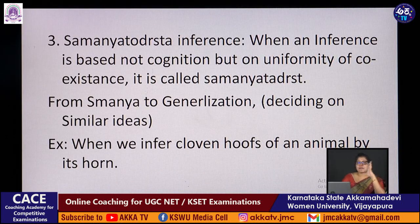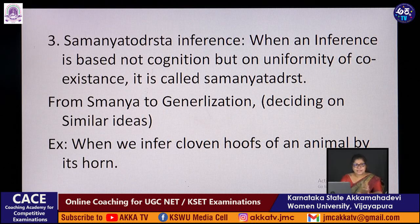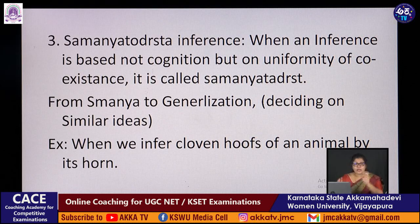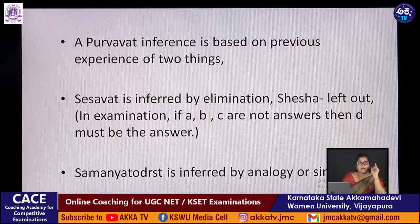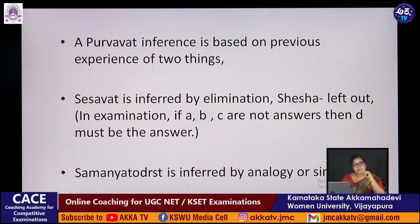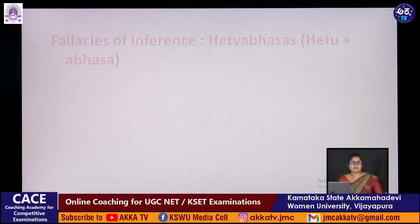Samanatadhrusht inference: here we infer based not on causation but on uniformity of coexistence — that is, similarity. For example, by observing an animal's movement pattern and physical features, we infer it has claws and hoofs. We see something similar to what we have experienced before and draw an inference by analogy. Purvavat is based on previous experience, sheshavat on effect leading to cause, and samanatadhrusht on analogy — inferring from similarity.